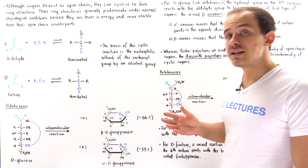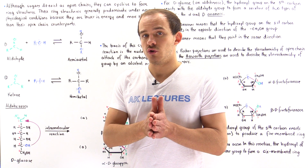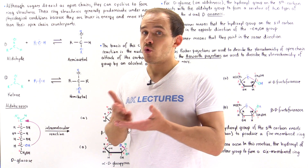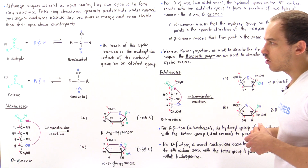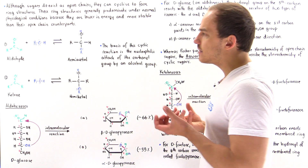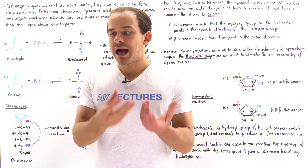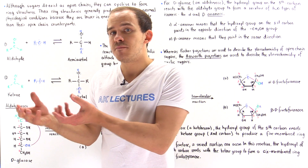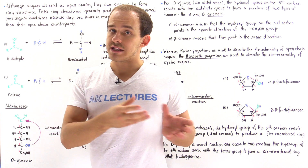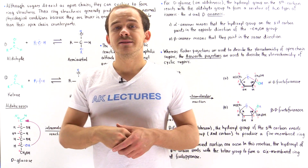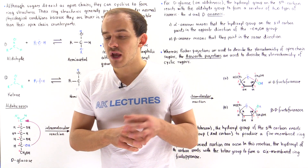Why? Because the ring structure of the sugar molecule is lower in energy and more stable than its open chain counterpart. What exactly is the reaction that takes place that allows that less stable, higher-energy open chain form to transform into the more stable, lower-energy ring structure form?